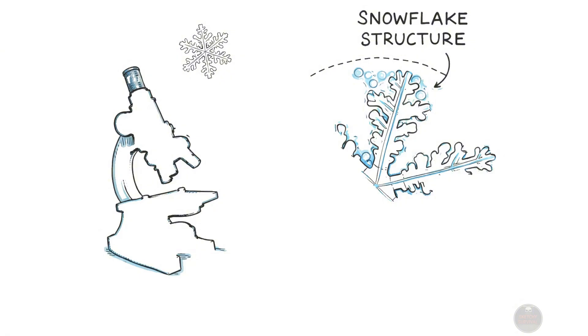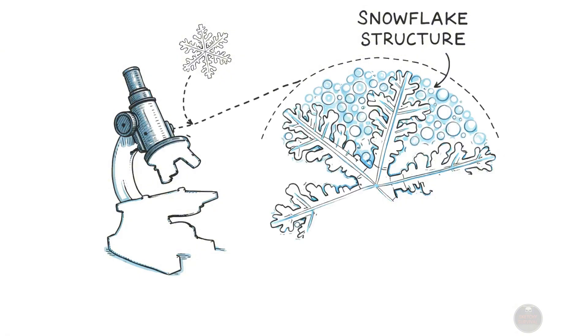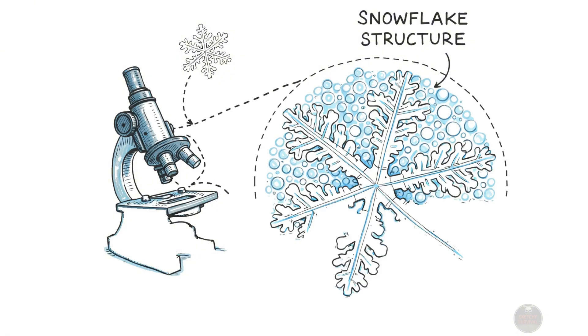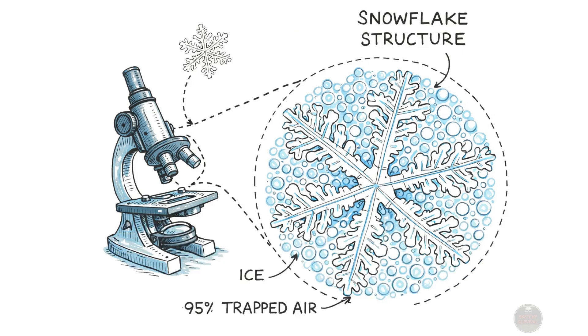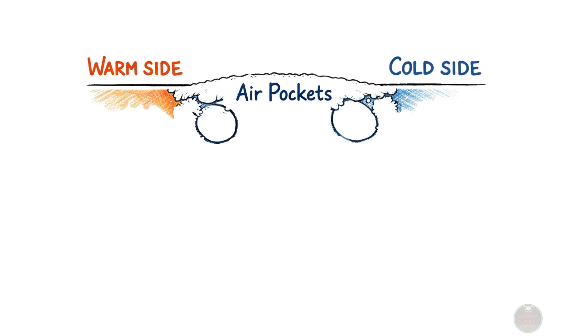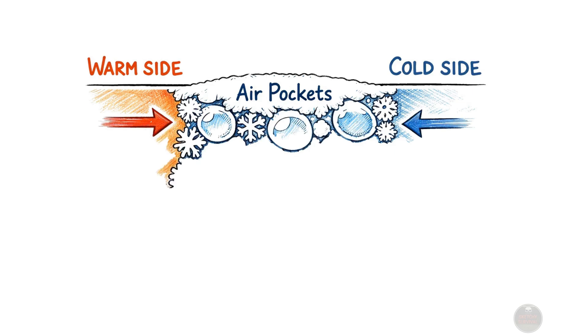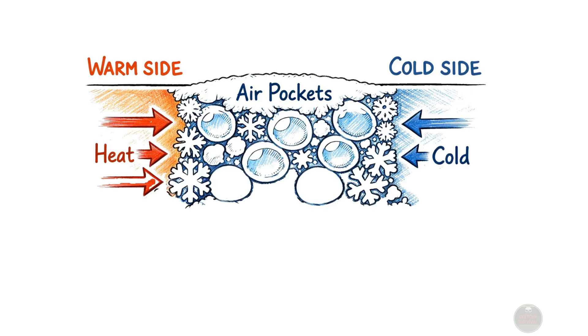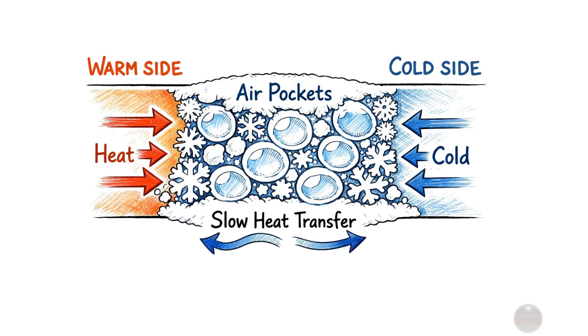When we examine individual snowflakes under a powerful microscope, we discover they are not solid ice but rather intricate, delicate structures composed of 95% trapped air. These tiny pockets of still air are actually pathetic conductors of heat, which means they significantly slow down the process of heat transfer from a warmer area to a colder one.